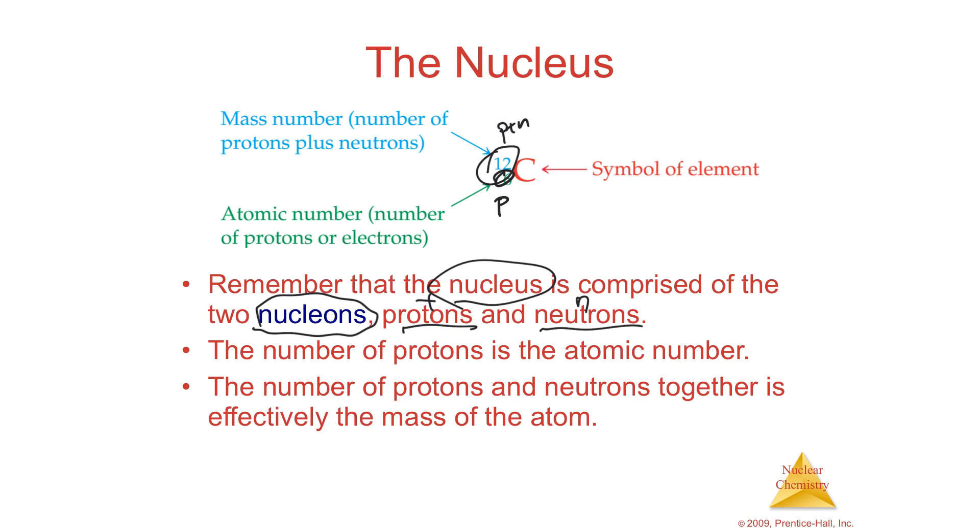So if you have the number of protons, 6, and you have the number of protons plus neutrons, 12, you can easily subtract those two and find the number of neutrons. You take the mass number, subtract the atomic number, and you end up with the number of neutrons.